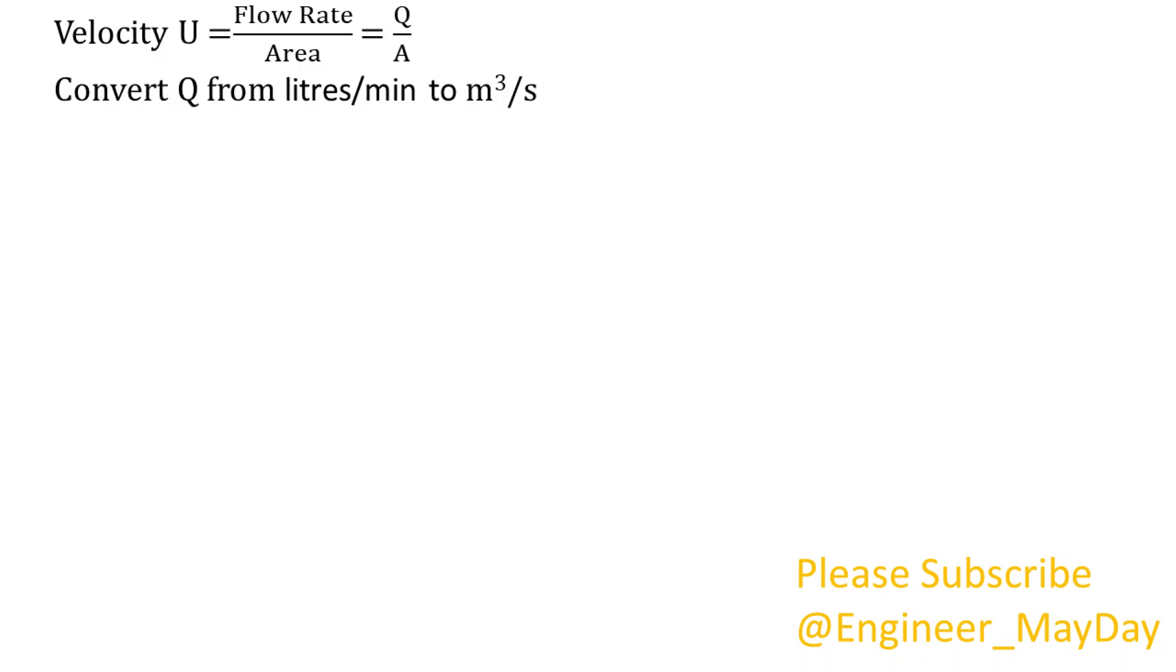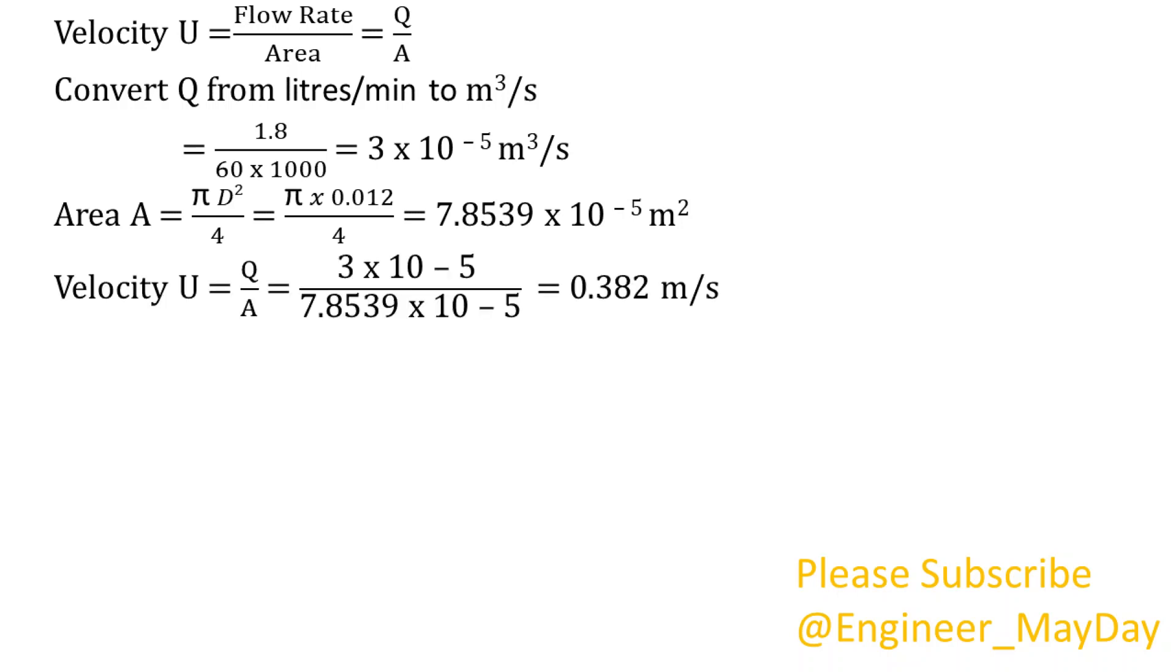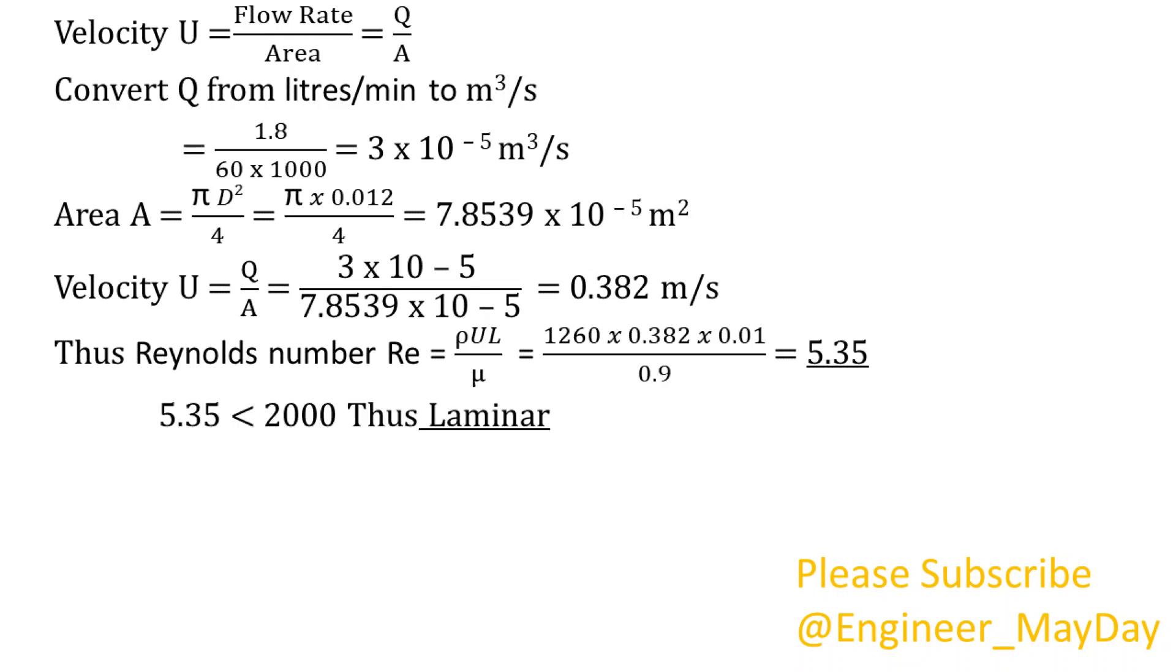Convert Q from liters per minute to cubic meter per second. We get 3 times 10 power minus 5 cubic meter per second. Area is equal to 7.8539 times 10 power minus 5 square meters. Substituting our values we get velocity to be 0.382 meter per second. Thus Reynolds number is equal to 5.35. 5.35 is less than 2000 thus laminar.